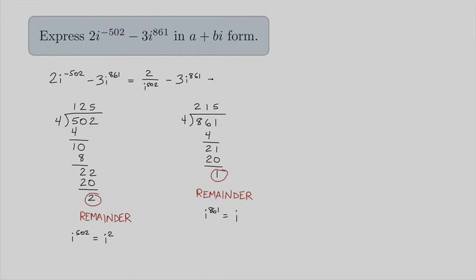Okay, so now I can go back to my expression and plug in these two values. So now I have 2 divided by i squared minus 3 times i.